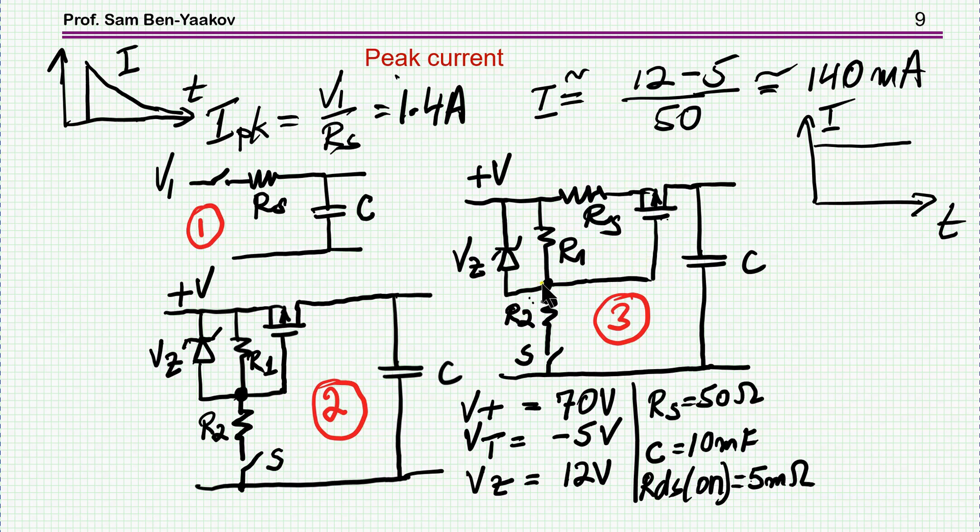Since this is 12 volt and the threshold here is 5 volt, we have 7 volt. So it's 7 over 50 ohms, 140 milliamp is going to be a fairly constant current. Here, we're going to have a high peak. This is the peak and then taper off exponentially.